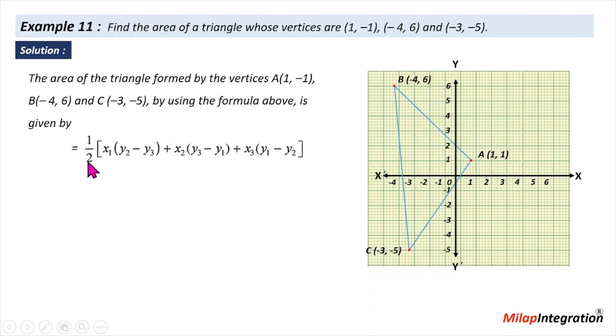The area of the triangle is given by half base into height: x1 multiply by (y2 minus y3) plus x2(y3 minus y1) plus x3(y1 minus y2).